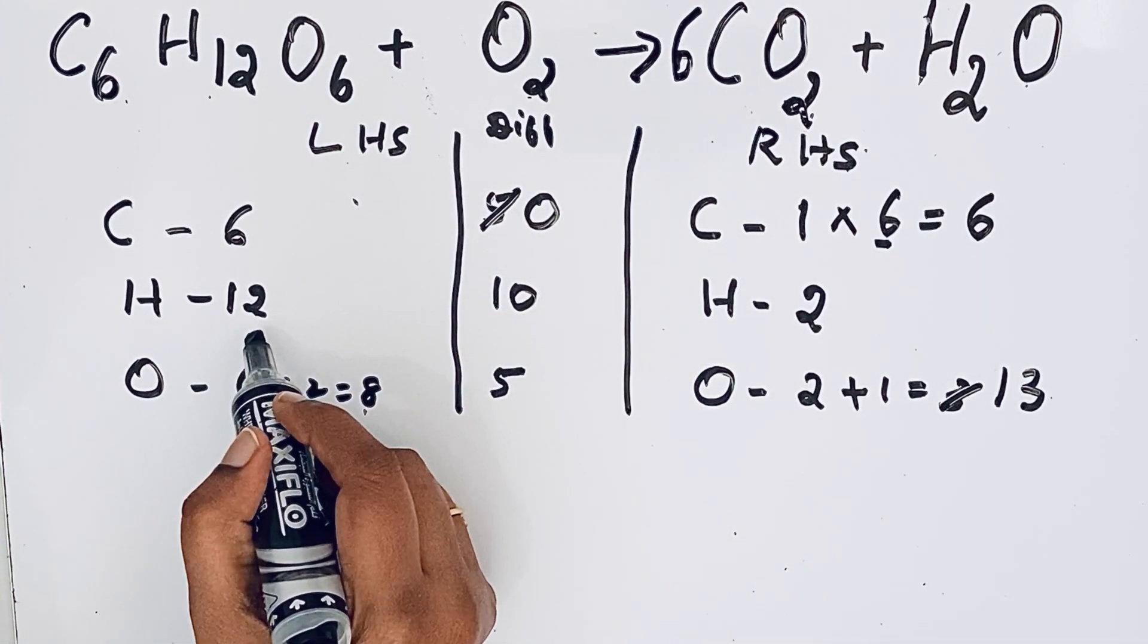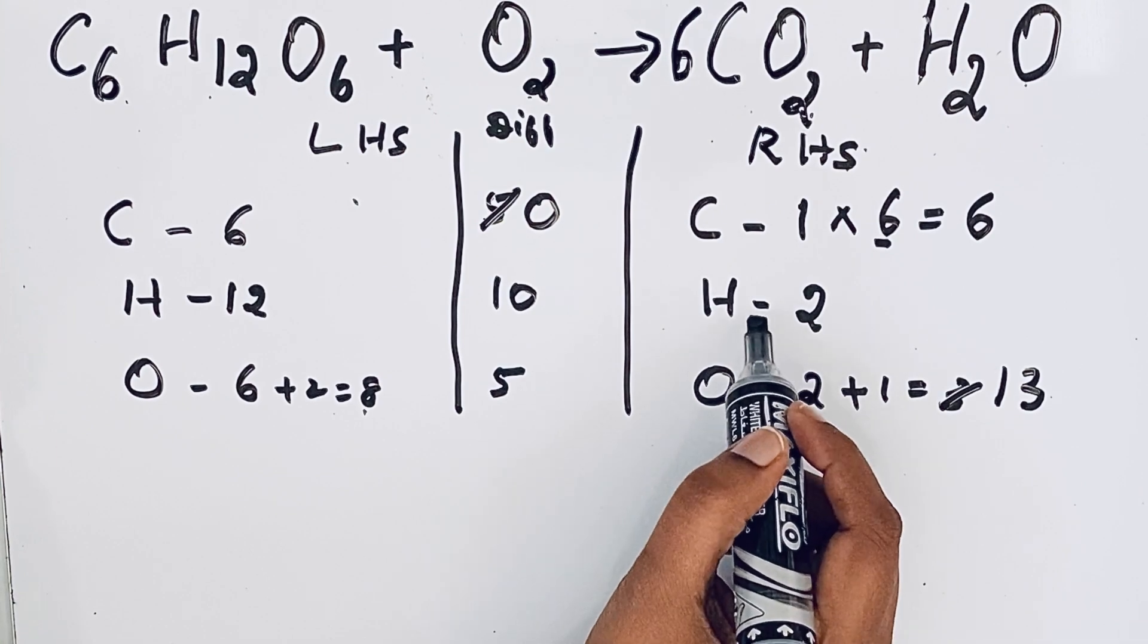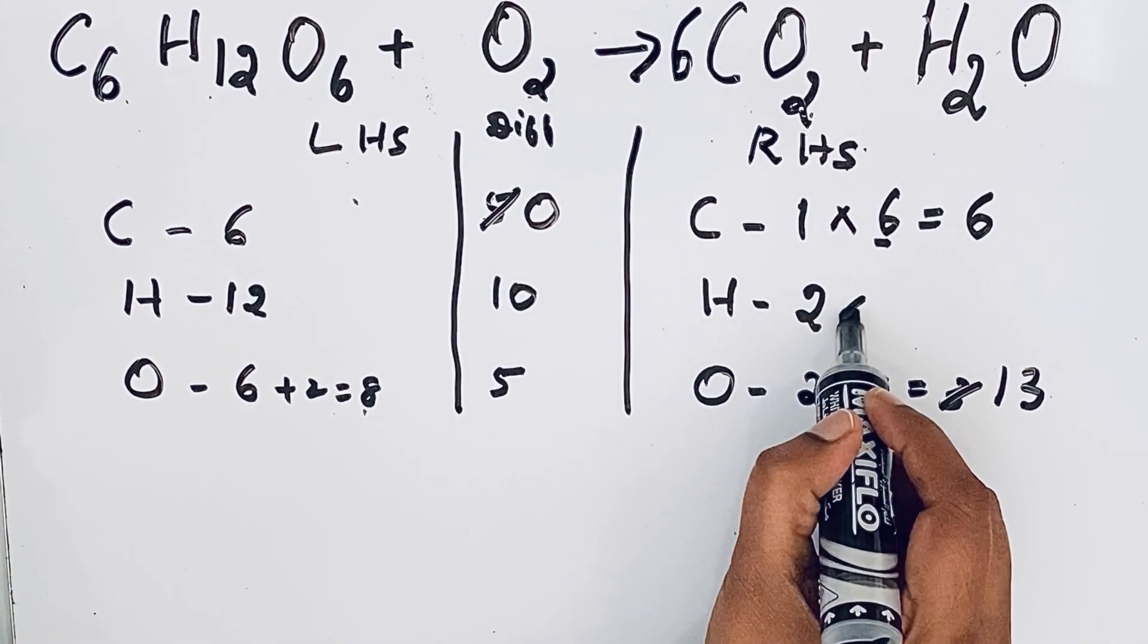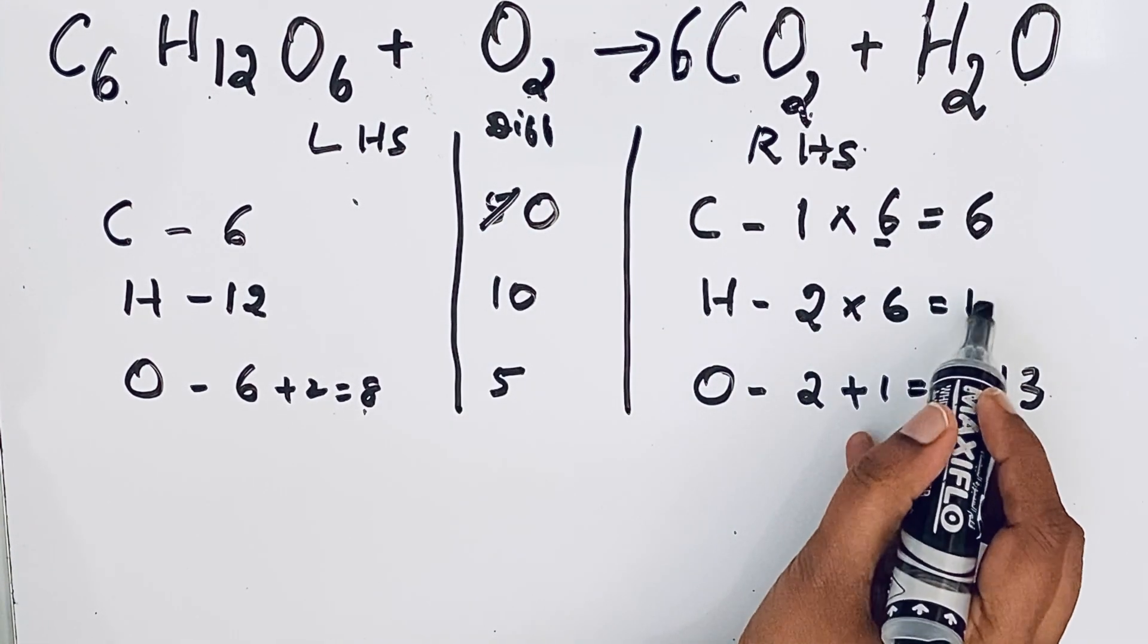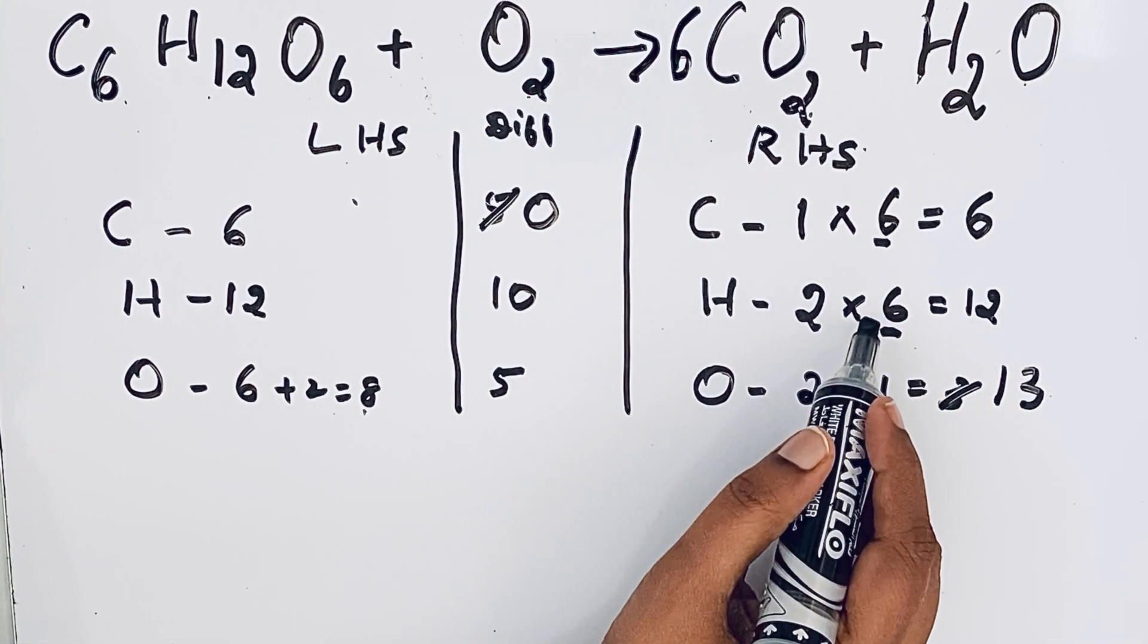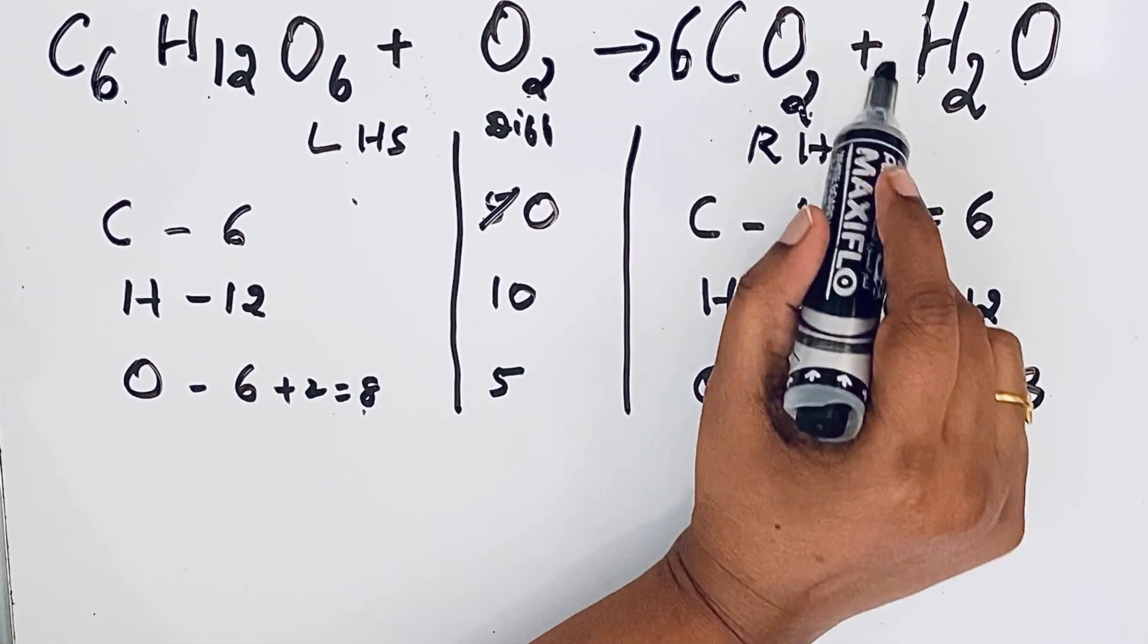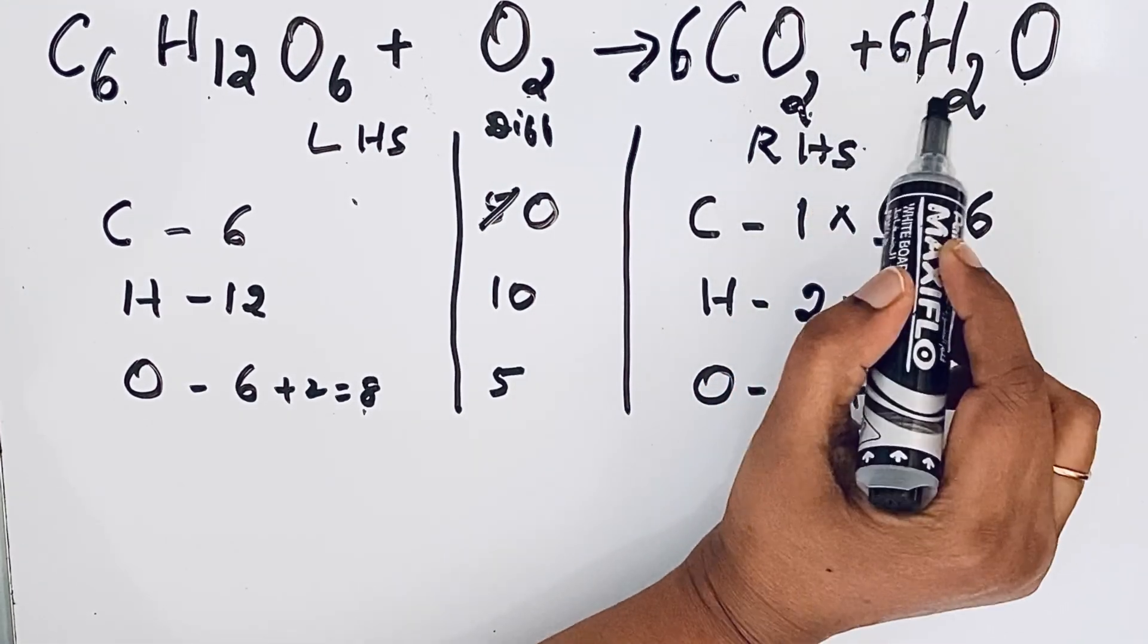Now come to hydrogen atom. Here 12, but in the right hand side 2. To make it 12, if you multiply with 6, you will get 12. So this 6 as a coefficient we are going to write for the compound containing hydrogen, so that means here H2O. Write 6H2O.